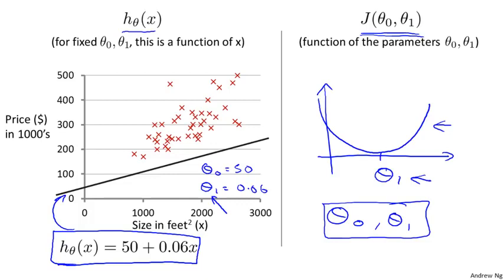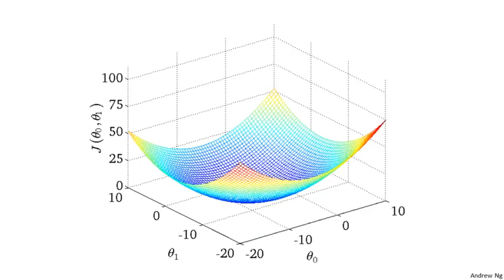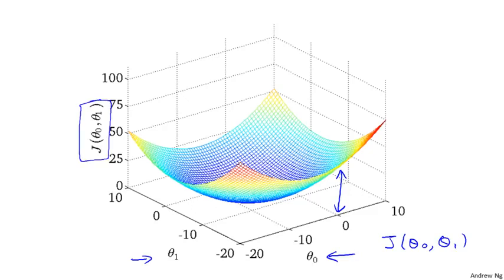It turns out that when we had only one parameter, the plots we drew had a bow-shaped function. Now, when we have two parameters, the cost function also has a similar sort of bow shape. Depending on your training set, you might get a cost function that looks something like this — a 3D surface plot where the axes are labeled theta 0 and theta 1. As you vary theta 0 and theta 1, you get different values of the cost function j of theta 0, theta 1. The height of the surface above a particular point indicates the value of j, and you can see it has this bow-like shape.